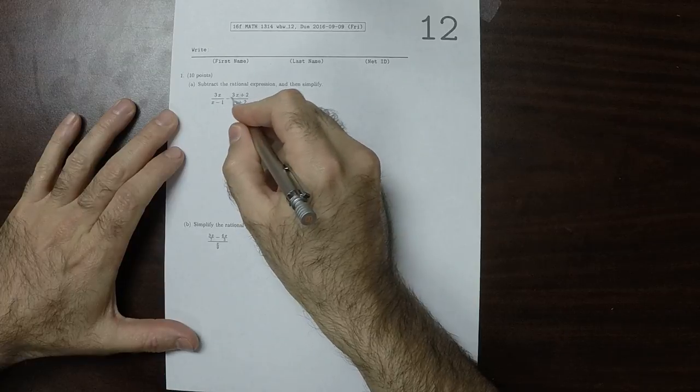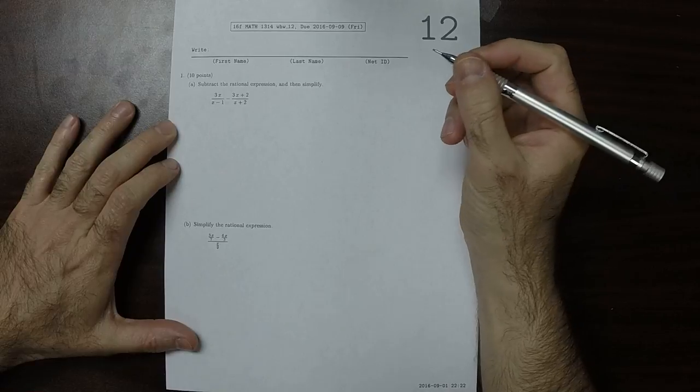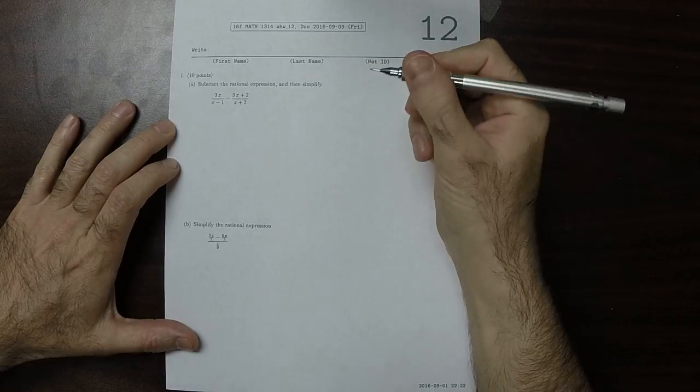This is the difference of two fractions. To proceed, we need to have a common denominator, so I'll cross multiply.